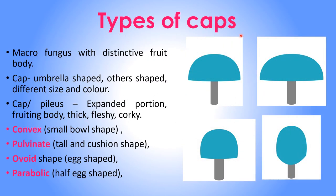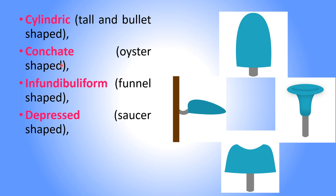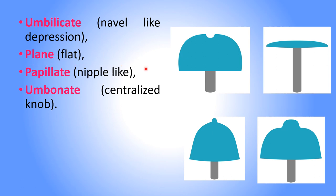The types of cap or pileus include: convex — a small bowl shape; pulvinate — a tall cushion shape; ovoid — full egg shape; parabolic — half egg shape; cylindric — tall and bullet shape; conchate — oyster shape; infundibuliform — funnel shape; depressed — saucer-shaped cap; umbilicate — navel-like depression; plane — flat cap; papillate — nipple shape; and umbonate — with a centralized knob present at the center of the cap.